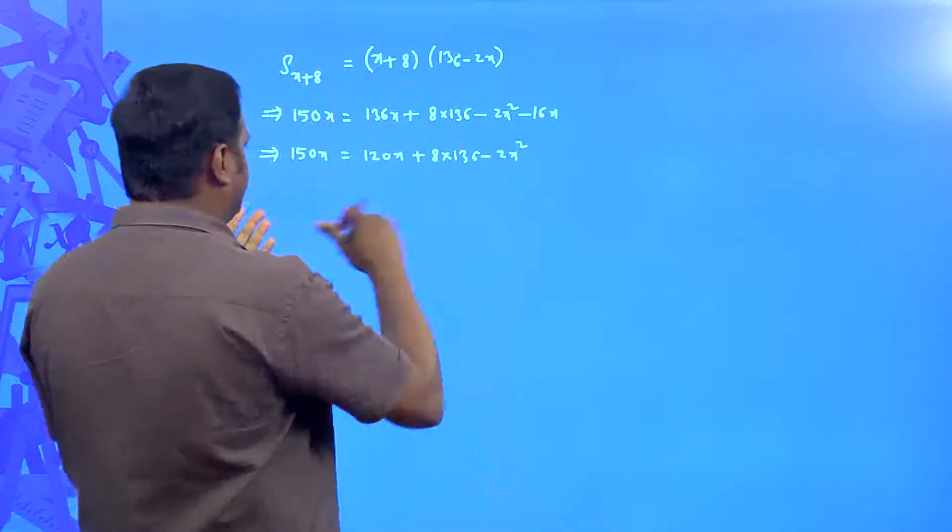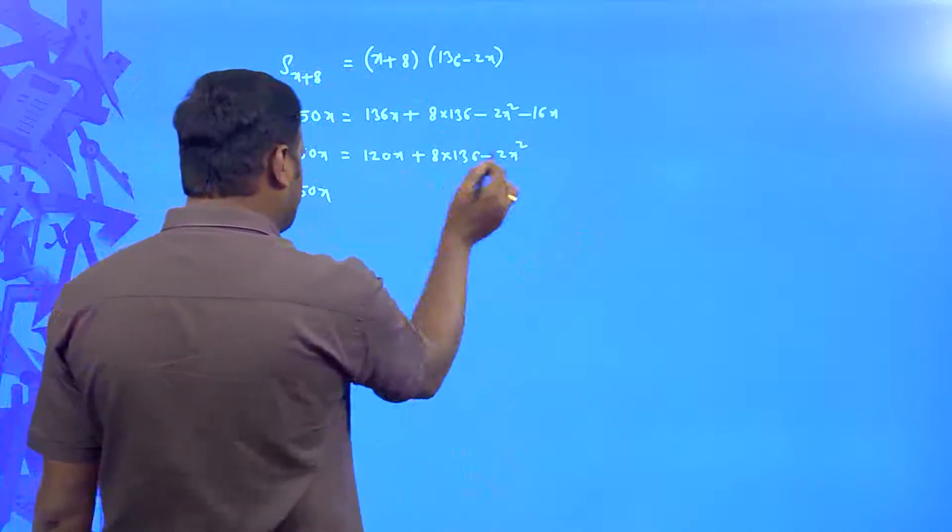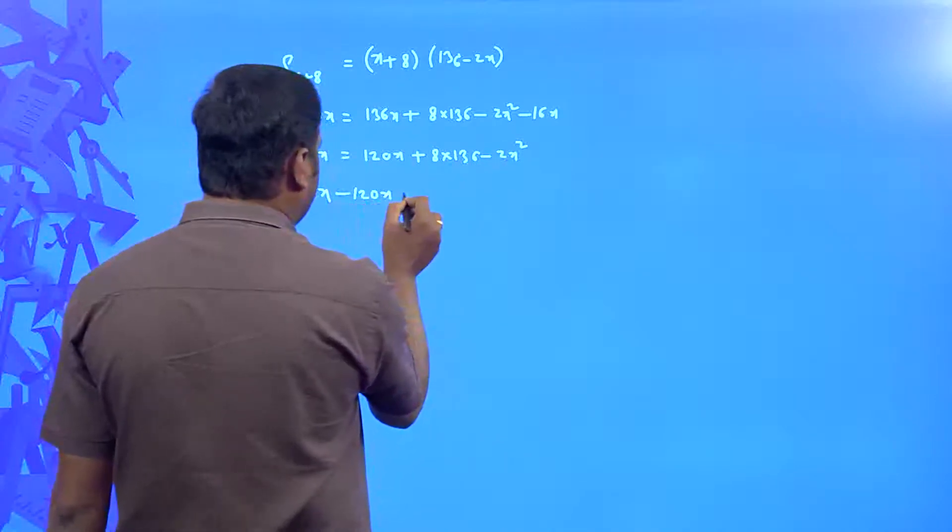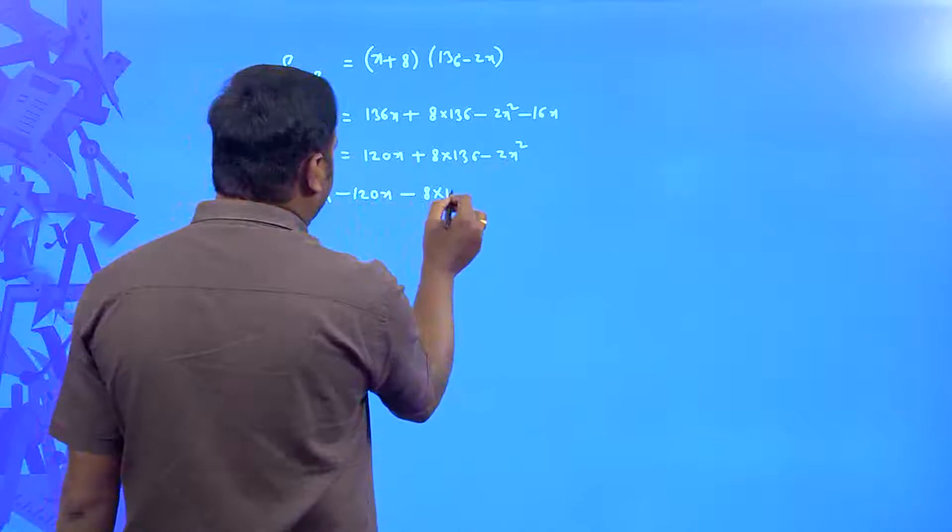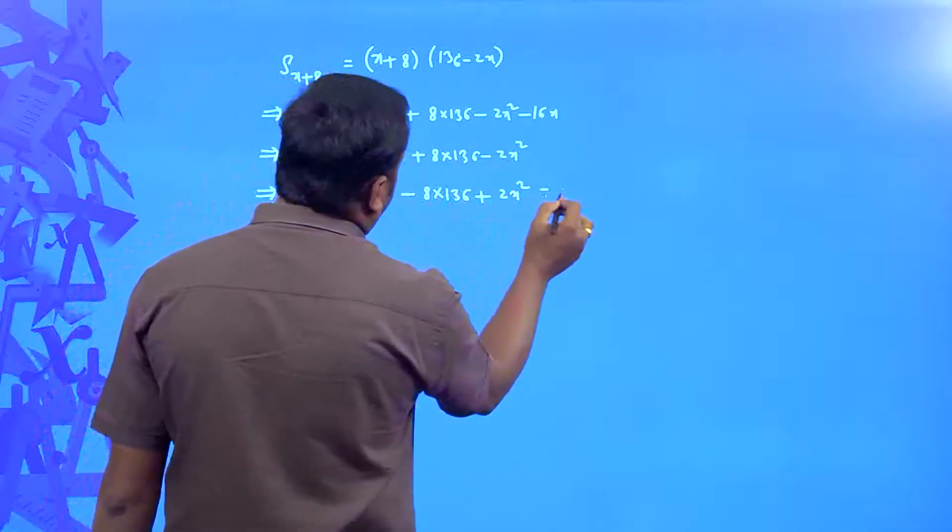Transpose all these terms towards left hand side, otherwise towards right hand side does not matter. 150x was already there, transposing all of them towards left hand side, that is minus 120x minus 8 into 136 is equal to 0.